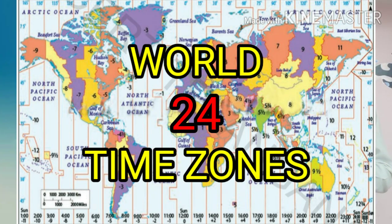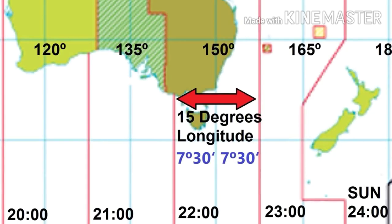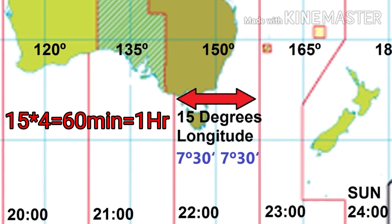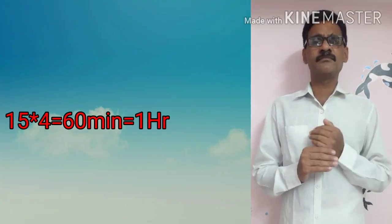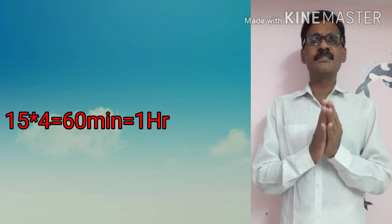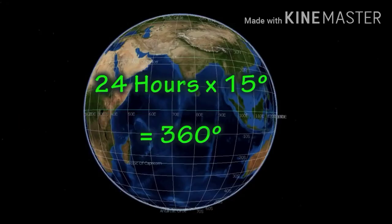The world is divided into 24 time zones. Each time zone width is 15 degrees of longitude, which means 1 hour. To cross one longitude it takes 4 minutes. There are 15 longitudes in one time zone — 15 multiplied by 4 equals 60 minutes, which is 1 hour. So each time zone corresponds to 1 hour.